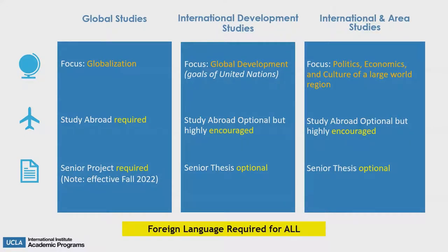One of the most common questions is the difference between Global Studies and International Development Studies. Global Studies is focused on globalization and how countries interact across borders, while International Development Studies looks at development issues that have impacted inequality in the modern world. A key difference is that Global Studies requires study abroad — with approved programs in Singapore, Paris, or New York for the United Nations — whereas for IDS it is optional. Global Studies also requires a senior project. Both majors require an application: freshmen apply during sophomore or junior year in fall quarter, and transfers apply during their first quarter at UCLA.